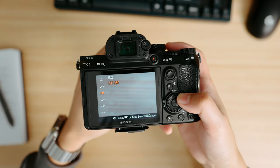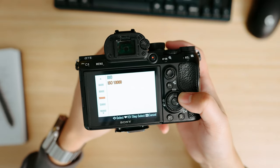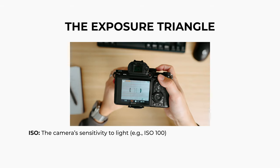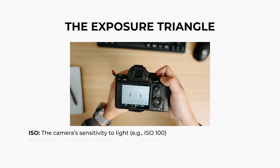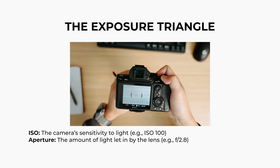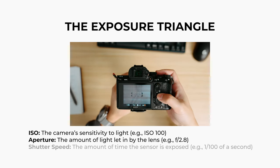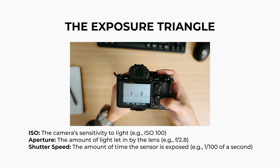The higher the value, the higher the sensitivity and the brighter your exposure. ISO plays a very crucial role in achieving the correct exposure for an image or video. When capturing a scene, photographers and videographers must balance the ISO with the aperture, which controls the amount of light entering the camera through the lens, and the shutter speed, which controls the duration of light exposure.